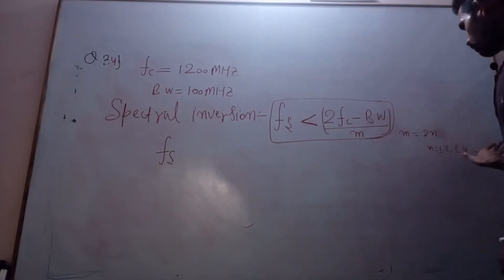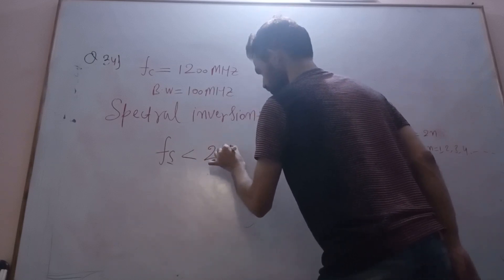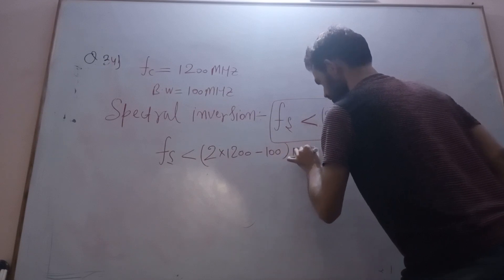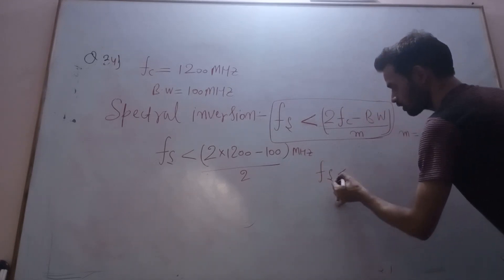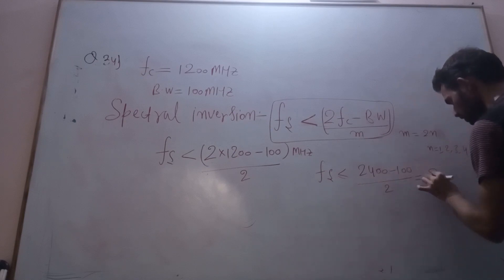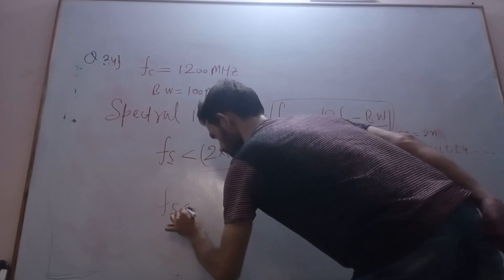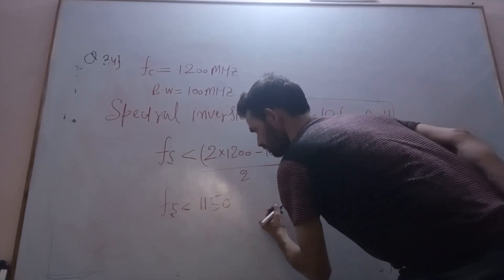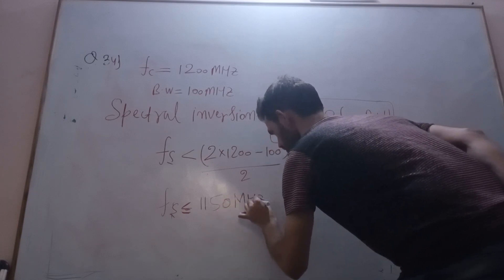So fs must be less than or equal to 2 times fc minus bandwidth divided by m. With m = 2, this gives us 2(1200) minus 100 divided by 2, which equals 2300 divided by 2, which is 1150 megahertz. So fs must be less than or equal to 1150 megahertz.